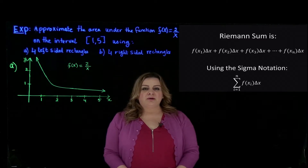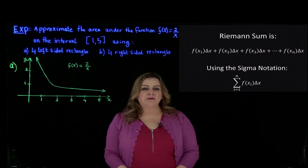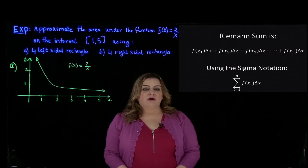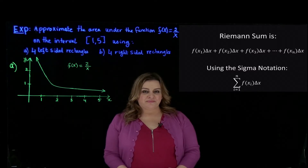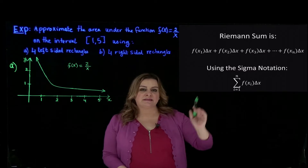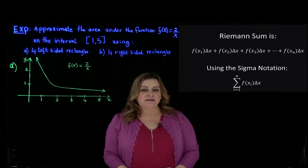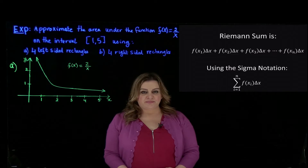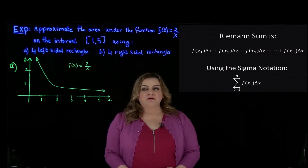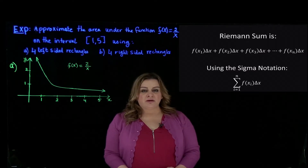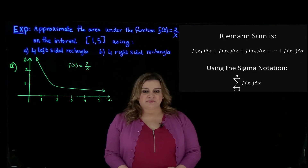Hello students. Today we will approximate the area under a curve applying the Riemann sum method. A Riemann sum for a function f of x over a closed interval AB is a sum of areas of rectangles that approximates the area under the curve. The Riemann sum is the sum of all terms from f of x sub 1 times delta x to f of x sub n times delta x, which we represent using sigma notation as the sum from i equals 1 to n of f of x sub i times delta x.